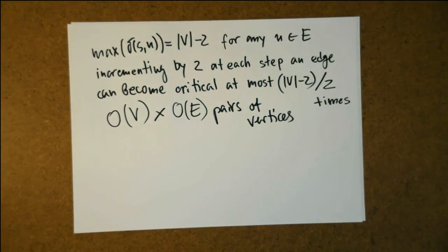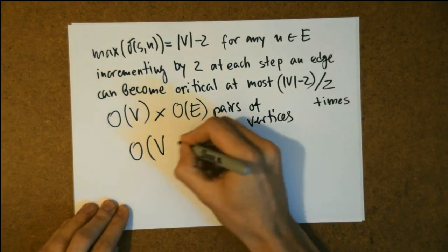So incrementing by at least 2, an edge U-V can become critical, at most, V minus 2 over 2 times, which is basically order of V. And we know that there are an order of E pairs of vertices in the network that can become critical edges, hence, we have a maximum number of iterations, that is, order of V times E.